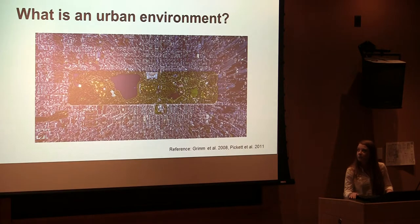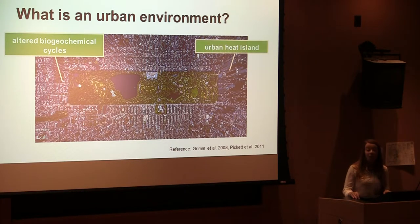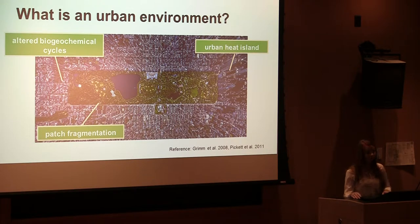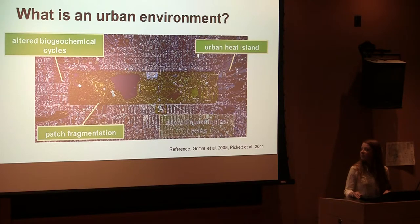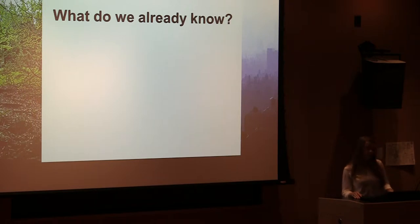What is an urban environment? Urban environments face a variety of factors, one of which is altered biogeochemical cycles — increased pollutants and increased nutrients such as nitrogen, phosphorus, and carbon. They also suffer from the urban heat island effect due to the abundance of impervious surfaces from roads and buildings, as well as patch fragmentation where parks are largely cut up by impervious surfaces. Additionally, there are altered hydrological cycles: ponds or rivers may exist but are largely altered by human influence.